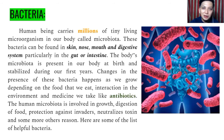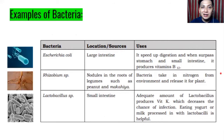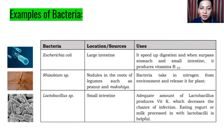Here are some helpful bacteria. First, Escherichia coli, or E. coli, found in the large intestines. It speeds up digestion and produces vitamin B12. Next, Rhizobium species, found in the nodules on the roots of legumes such as peanuts and makahiya. These bacteria take nitrogen from the environment and release it for plants — part of the nitrogen cycle.